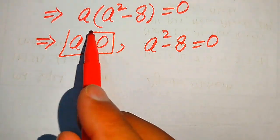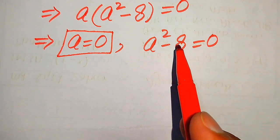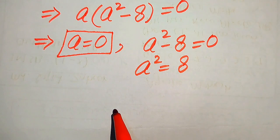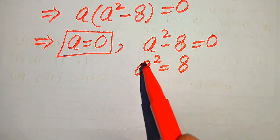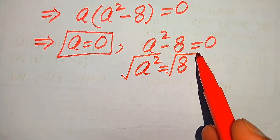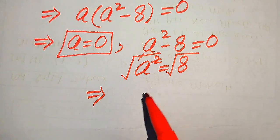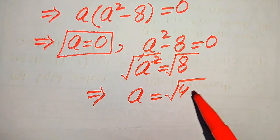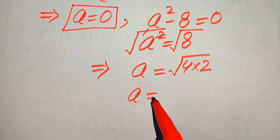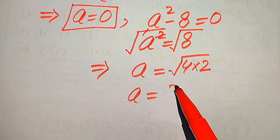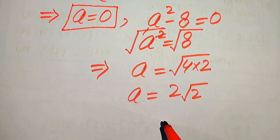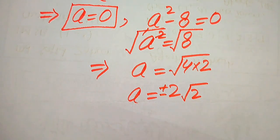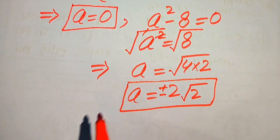We divide into two cases. The first case gives A equals 0, which is our first root. For the second case, A squared minus 8 equals 0, so A squared equals 8. Taking the square root on both sides gives A equals plus or minus square root of 8, which we write as plus or minus 2 times square root of 2. These are the other two roots.